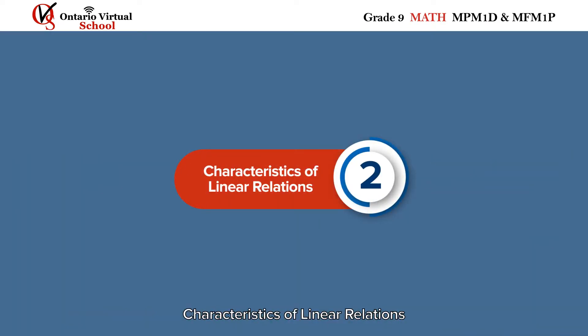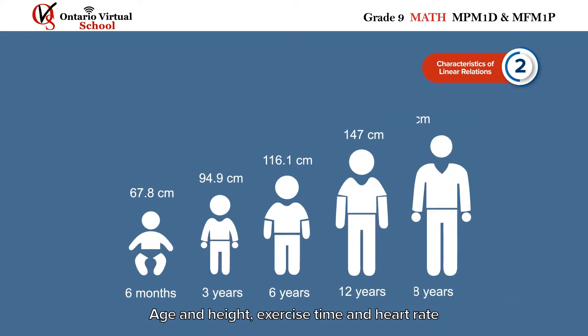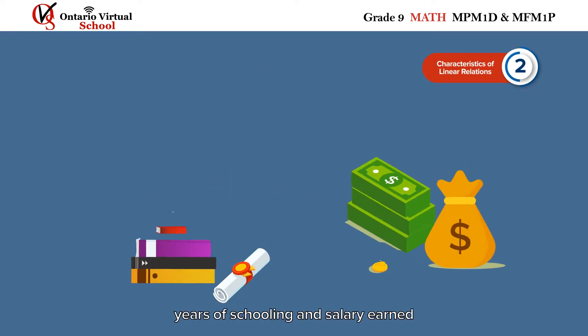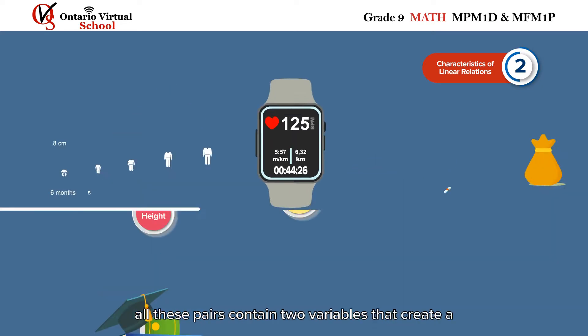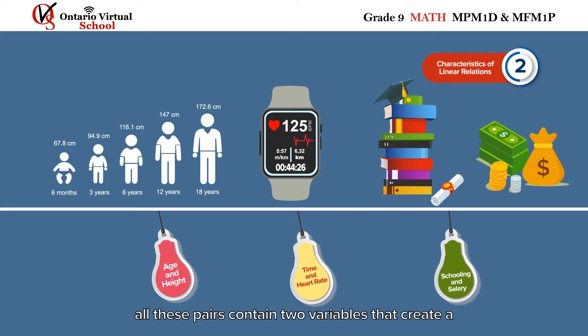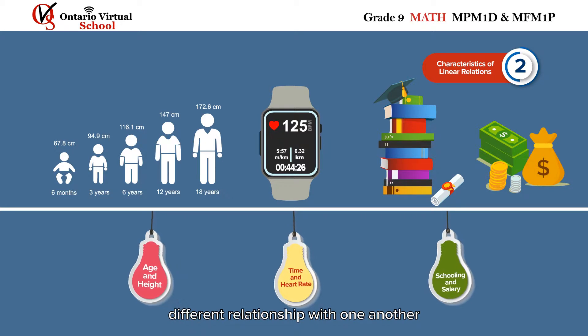Characteristics of Linear Relations. Age and height, exercise time and heart rate, years of schooling and salary earned - all these pairs contain two variables that create a different relationship with one another.